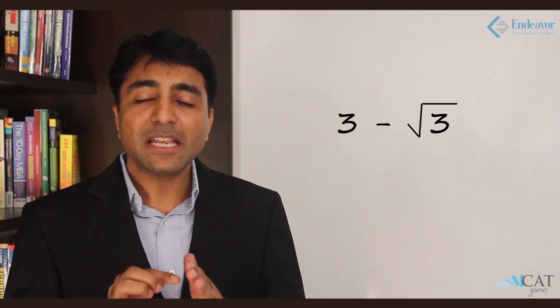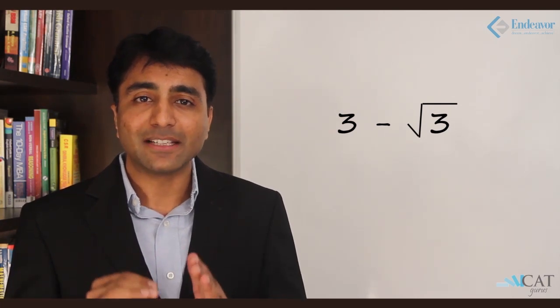This will give us 3 minus root 3 the whole square, which the entire term is under square root. Now, if I have a perfect square inside the square root, I will be able to remove the outer square root. Simplifying this, I will get 3 minus root 3 as my final outcome.